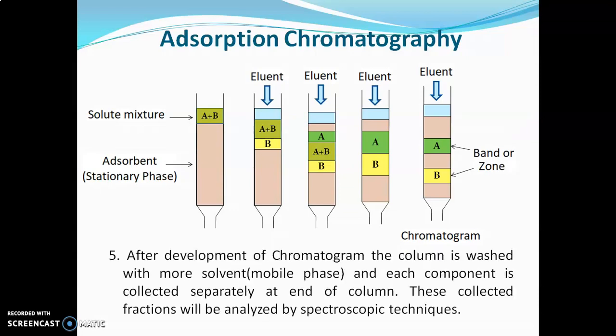After development of the chromatogram, the column is washed with more solvent, that is mobile phase, and each component is collected at the end of the column separately in a beaker. These collected fractions will be analyzed by spectroscopic techniques.